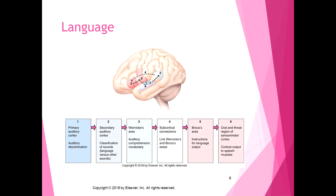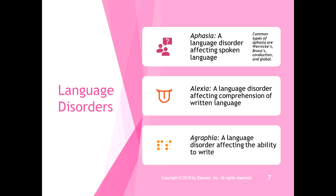There are cortical connections linking Wernicke's and Broca's areas, represented by a dotted line in the diagram. Broca's area gives instructions for language output — it's our premotor speech area. Then the oral and throat region of the sensorimotor cortex provides cortical output to the speech muscles. So it's very similar to other sensory-motor processing: primary sensory → secondary sensory → association cortex (Wernicke's) → premotor area (Broca's) → motor cortex output to muscles, but specific for language.